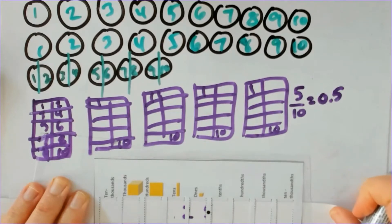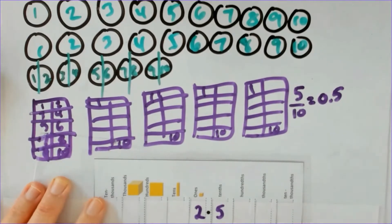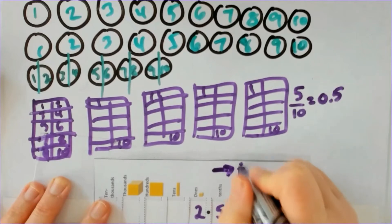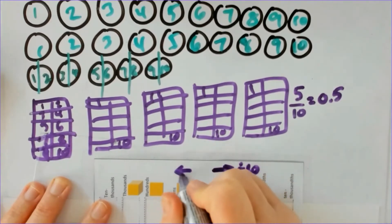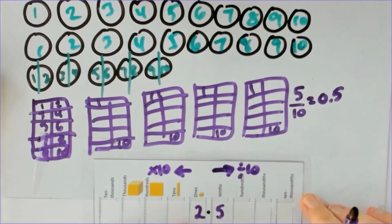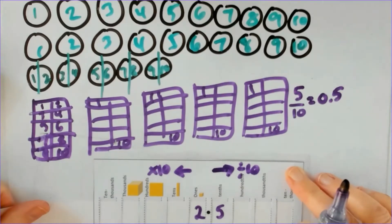So all I do is I slide one value of place, the place value moves one spot and that's dividing by 10. So you can put on here divide by 10 and multiply by 10 if you like. And that way the decimal point never moves, I just slide the value of the digits.